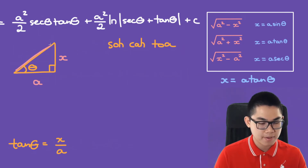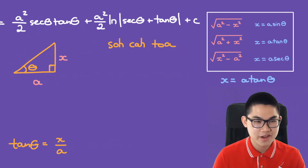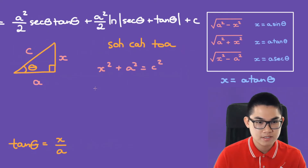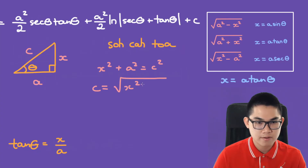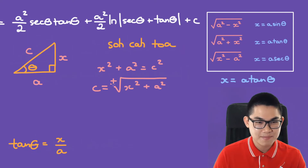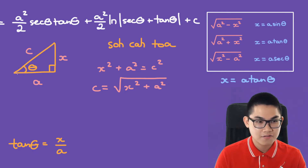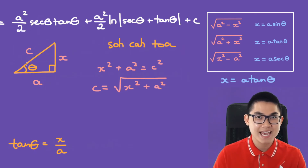We need to solve for the hypotenuse. By the Pythagorean theorem, x squared plus a squared equals c squared, so c will be equal to the square root of x squared plus a squared. We use only the positive root because the side length of a triangle is always a positive number.